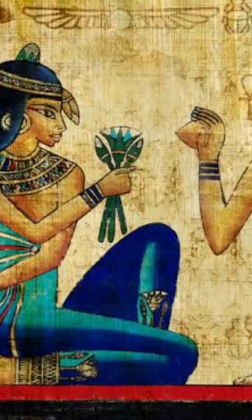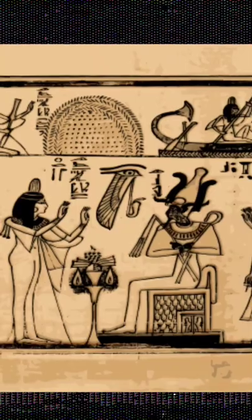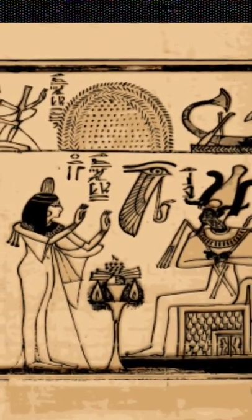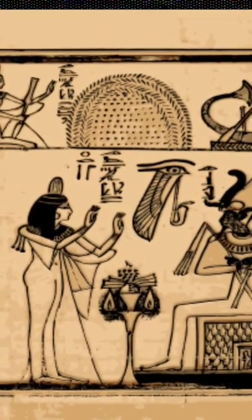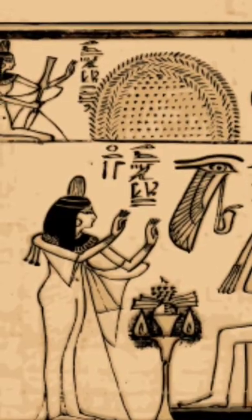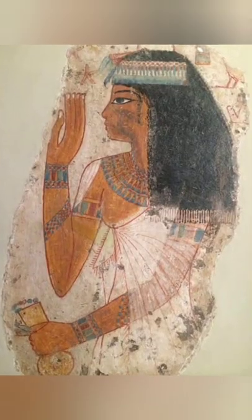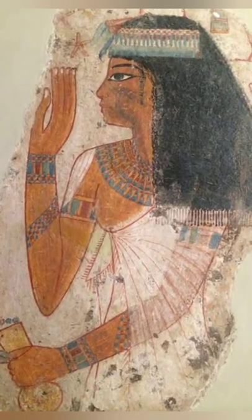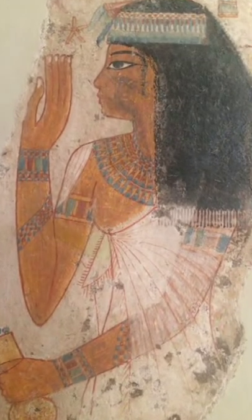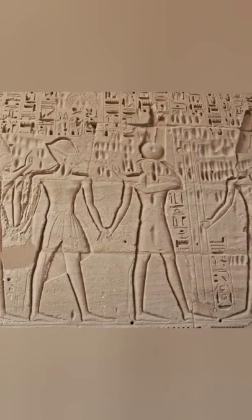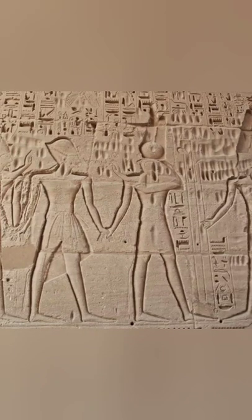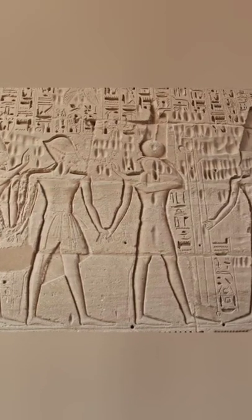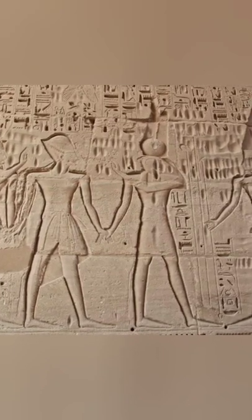waist, and limbs in profile, but eye and shoulders frontally. These scenes are complex composite images that provide complete information about the various elements, rather than ones designed from a single viewpoint, which would not be as comprehensive in the data they conveyed.